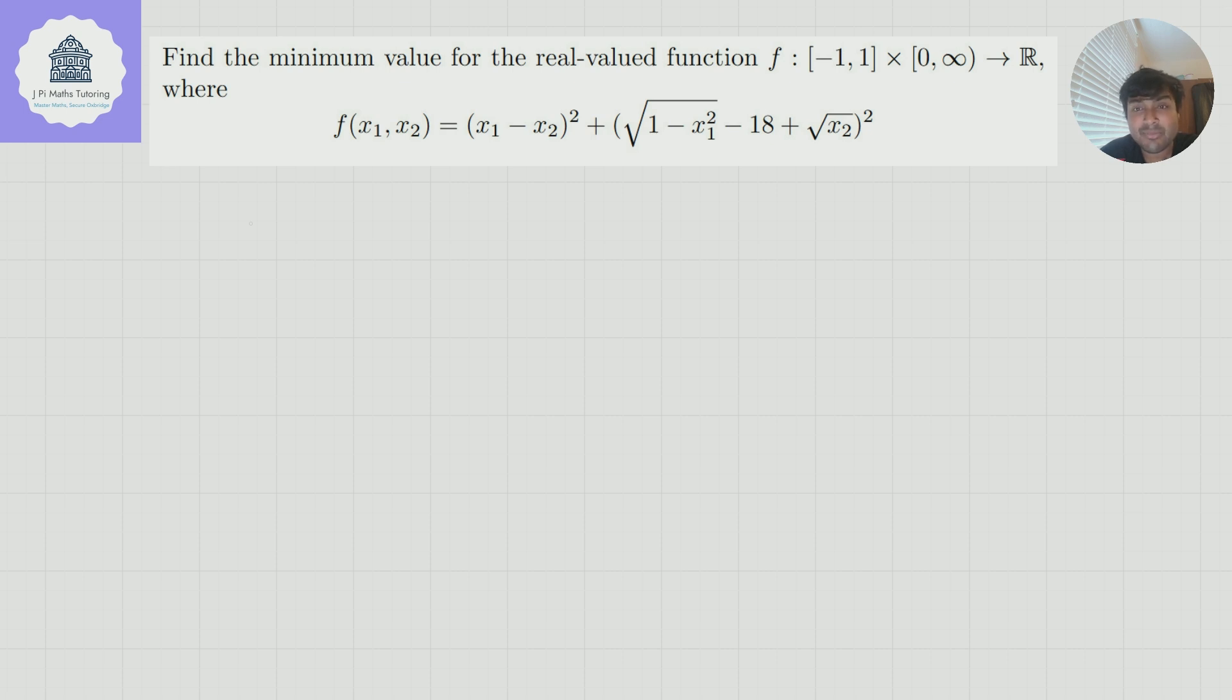We've got to find the minimum value for the real valued function f which takes in two inputs x1 and x2, where x1 is between minus 1 and 1, x2 is at least 0 and it spits out some real number. f of x1, x2 is (x1 - x2)² plus (√(1 - x1²) - 18 + √x2)² all squared.